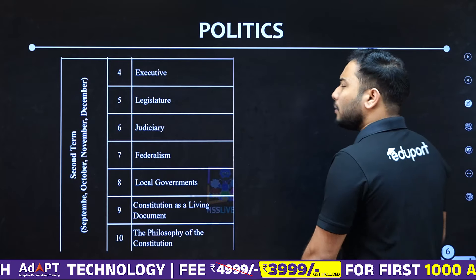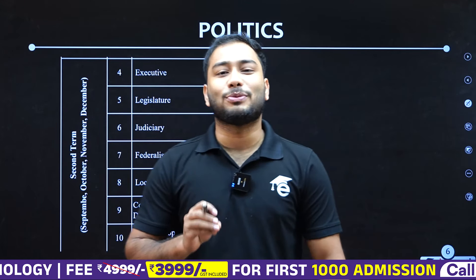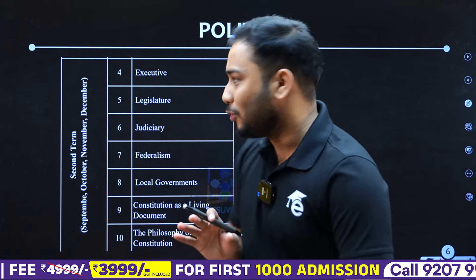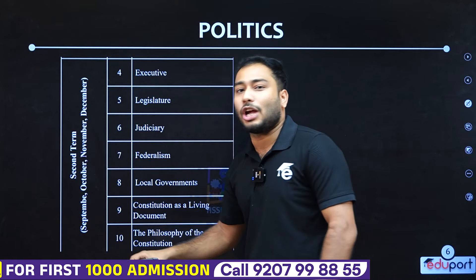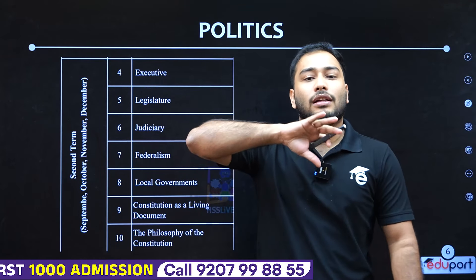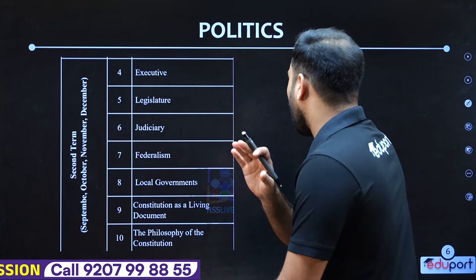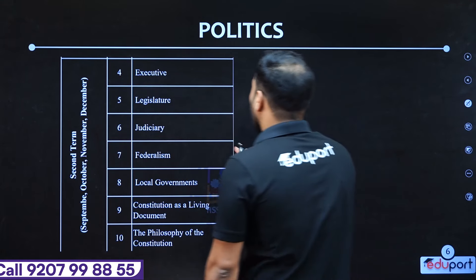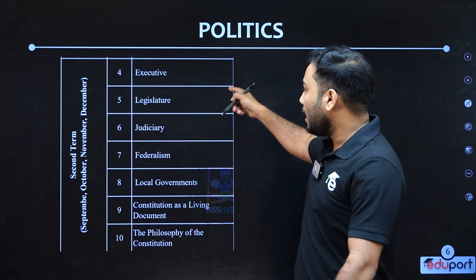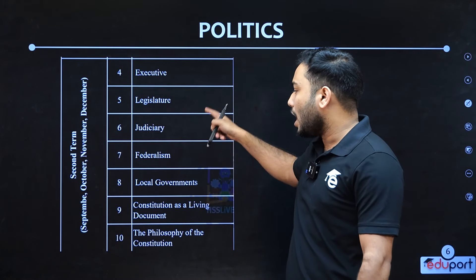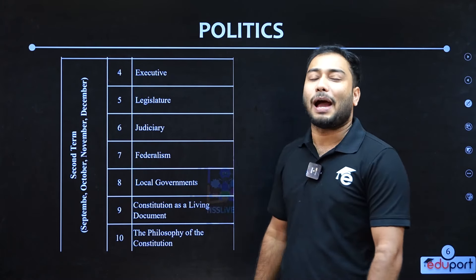If you look at politics, there are many chapters. In the 4th chapter, there are 10 chapters in the Constitution and Advocacy. There are many chapters you can learn — chapters 4, 5, 6, 7, 8, and 10.